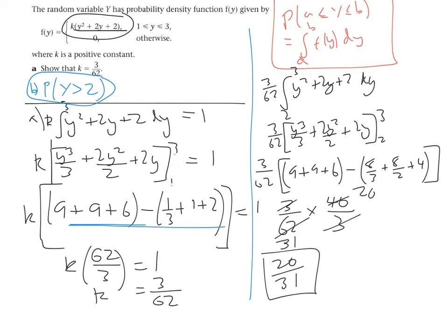So in order to work out the probability there, we had to integrate between the two limits. So if I was to sketch our function, it's a positive quadratic between 1 and 3, so it's probably going to look something like that. We integrated the area that we wanted, which was between 2 or greater than 2. So the area that is under the curve greater than 2 is between 2 and 3. So we integrated between those two limits to find that red shaded area, which gave us this probability of 20 over 31.